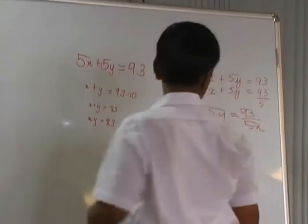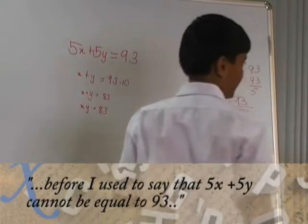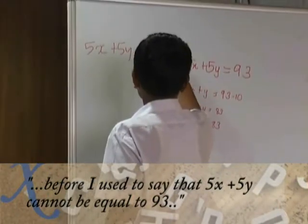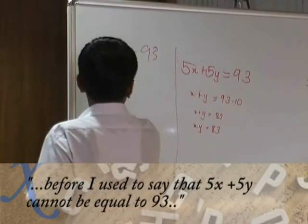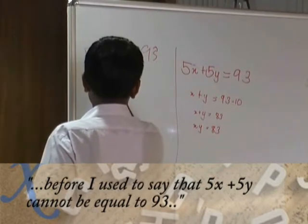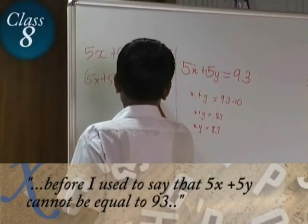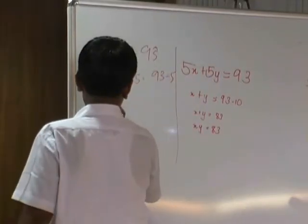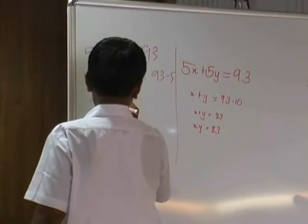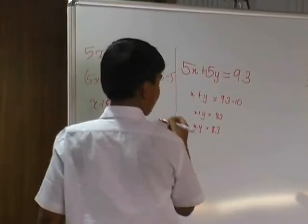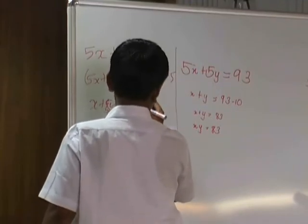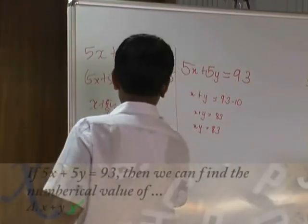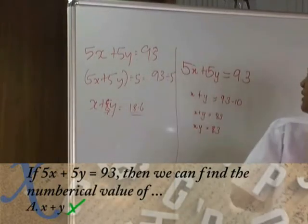Before, we used to say that 5x plus 5y cannot be 93, but now if it's a decimal number then you can find it. So if you divide the whole equation 5x plus 5y by 5, then you can divide 93 also by 5. You'll get x plus y, and 93 divided by 5 will give us 18.6. So x plus y will be 18.6. So then what do you think is the answer to this question? A.